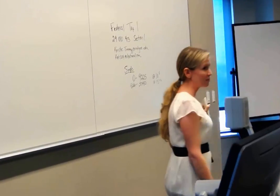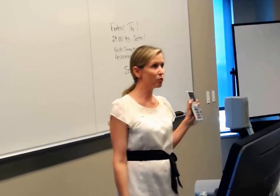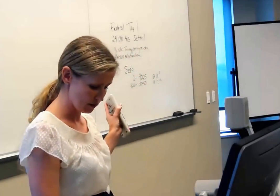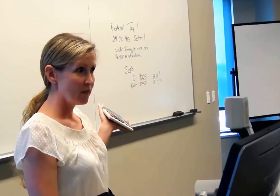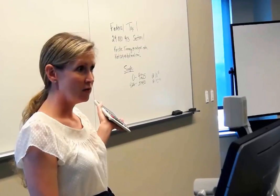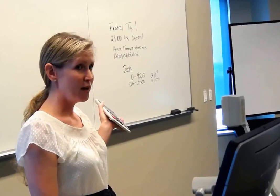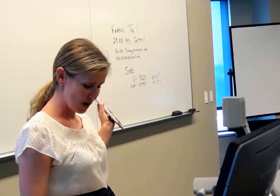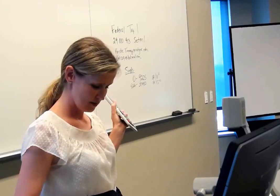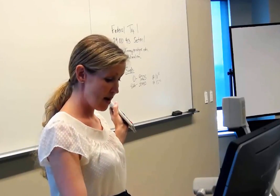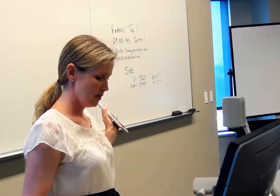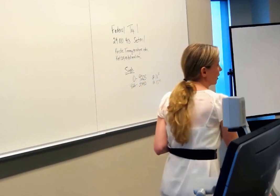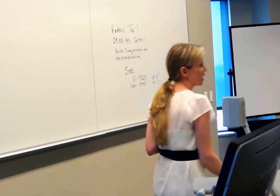You should come up with $15,043.75. Now you guys try. Let's say we have a married filing jointly couple and they have $150,000 in taxable income. What would their tax be?